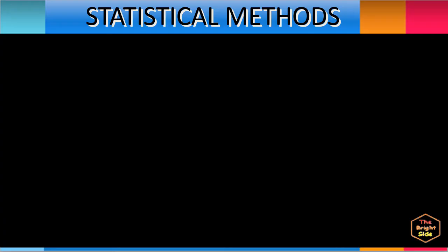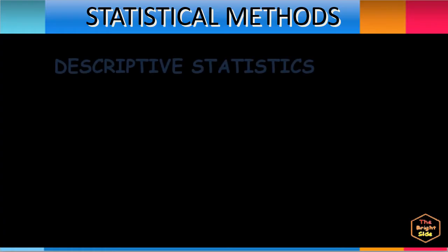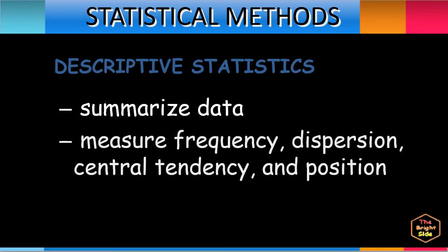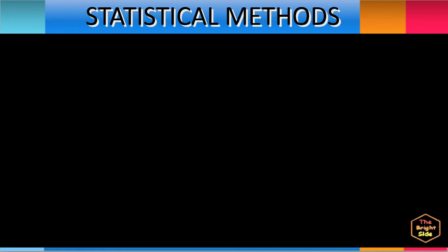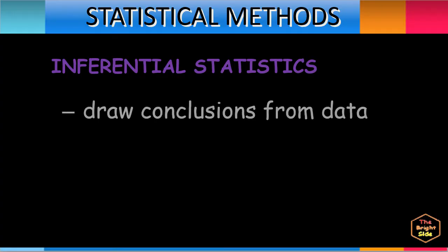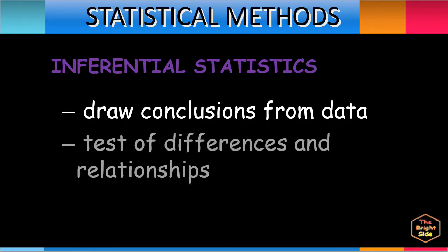The two main statistical methods used in data analysis are: first, descriptive statistics, which describes and summarizes data from a sample. Data is analyzed through measures of frequency, dispersion, central tendency, and position. The second type is inferential statistics, which uses data collected from a sample to make decisions, predictions, or inferences from a population. Analysis of data involves tests of differences and relationships between different sets of data.